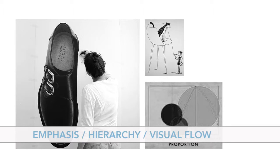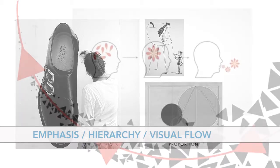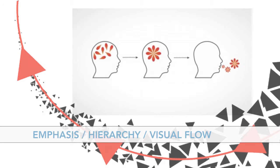Hierarchy will prioritize your elements. This is where you will visually arrange all of your graphics and type to establish the importance of each element. Visual flow is more about the visual sequence and the order in which you will lead the viewer through the design.